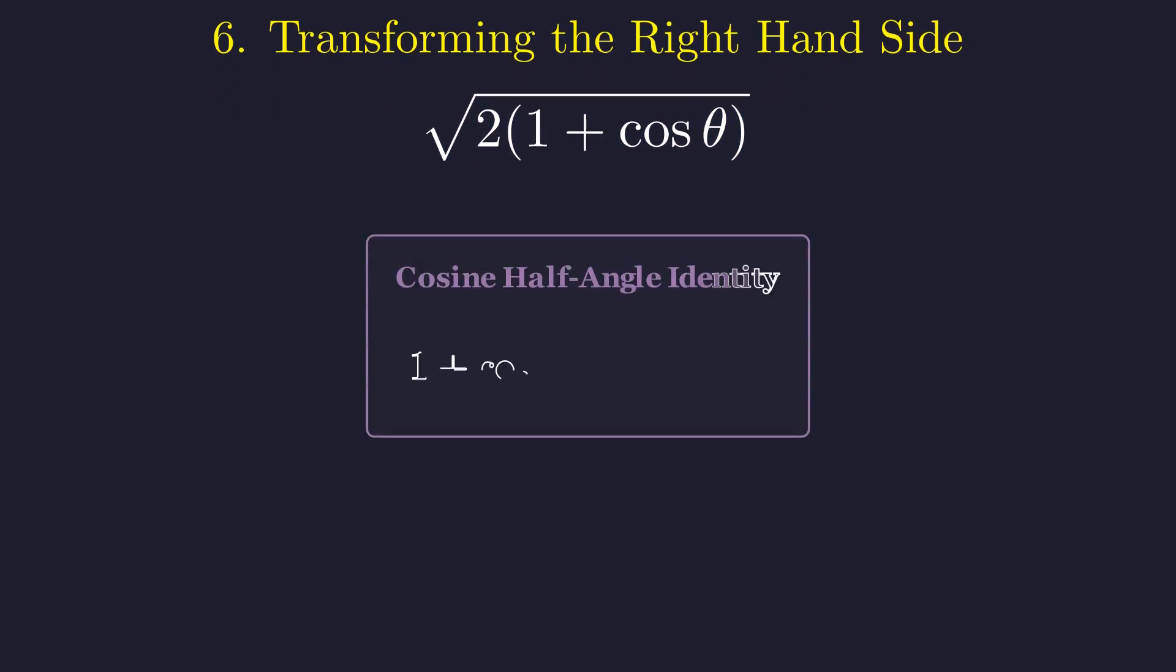Here's another trigonometric identity coming to the rescue. 1 plus cosine theta equals 2 cosine squared of theta over 2. Let me use that identity to replace 1 plus cosine theta. This becomes the square root of 2 times 2 cosine squared of theta over 2. 2 times 2 is 4. So this becomes the square root of 4 cosine squared of theta over 2.